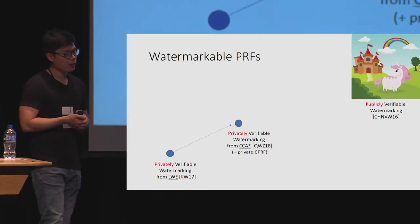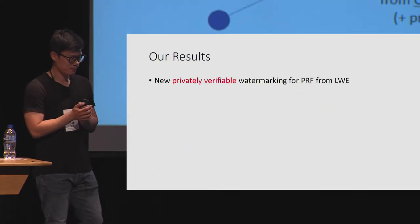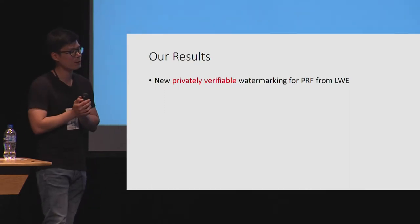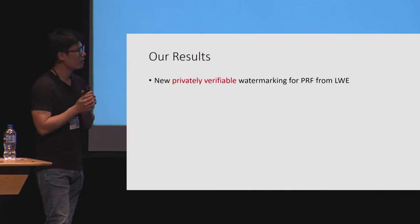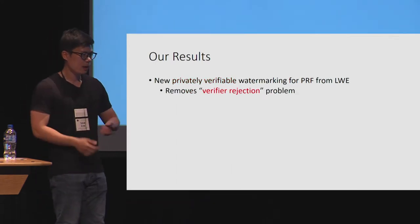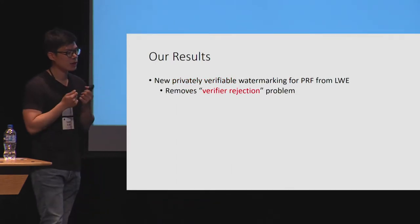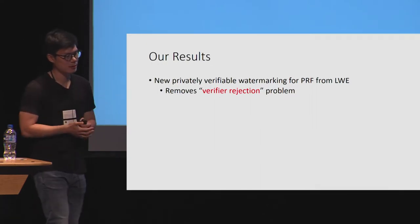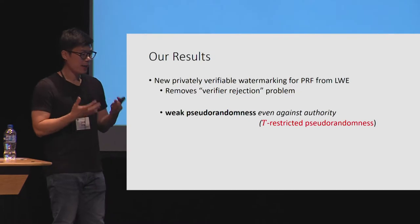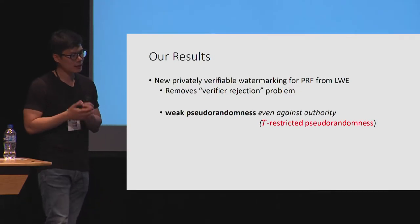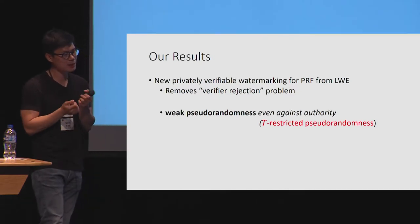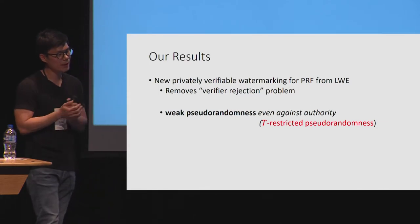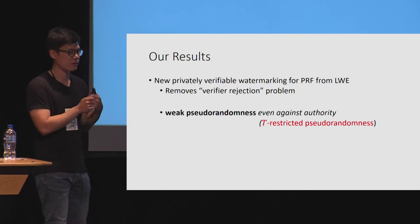This is basically where our work comes in. In this work, we construct a new privately verifiable watermarking scheme for PRFs from the standard learning with errors assumption. We basically remove the verifier rejection problem that was evident in the Kim-Wu construction, just like the QWZ construction. And the PRF family that we construct has security against the verifying authority — in particular, it provides weak pseudorandomness against the authority.